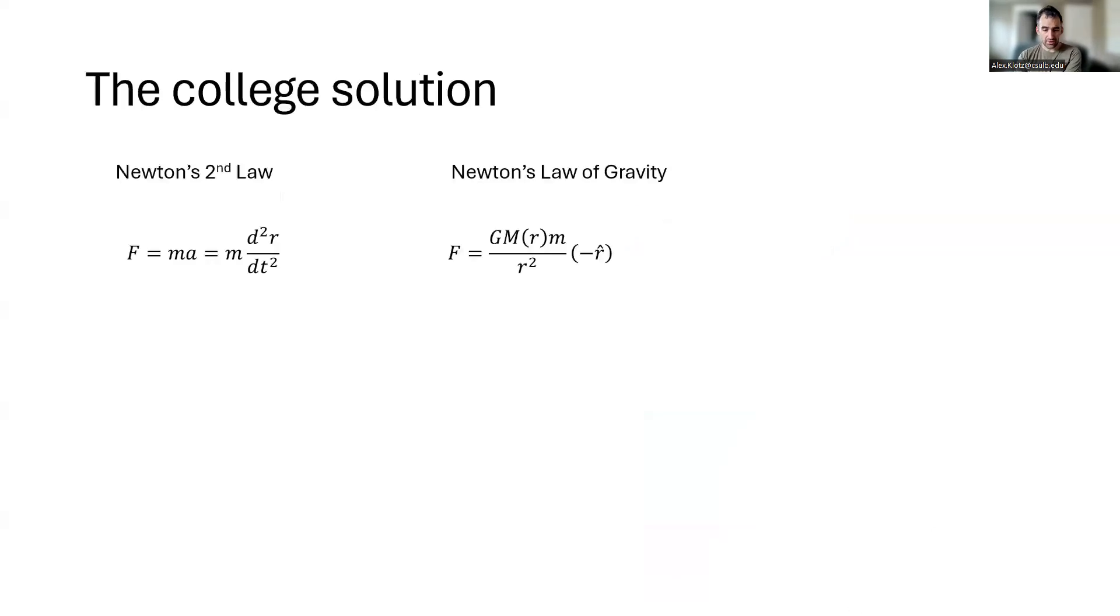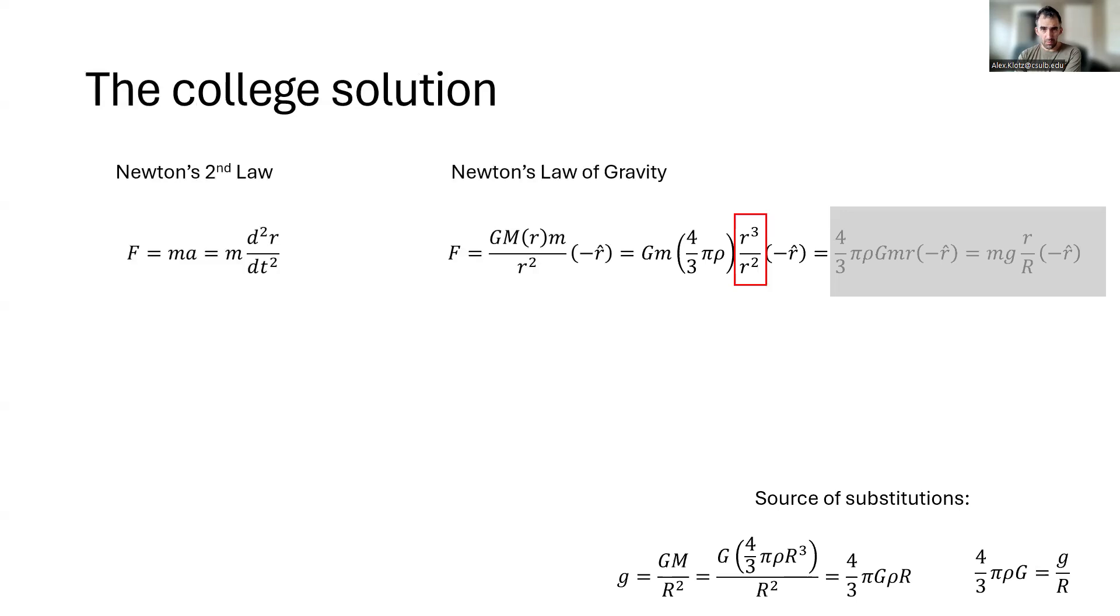So to figure out how long this would actually take to fall through, we can equate Newton's second law, F equals ma, with Newton's law of gravity, where the mass depends on radial position. So if we use the shell theorem, we know that the mass grows as the cube of radius, the gravitational field falls off as the square of radius, and these cubed and square cancel, leaving us with a linear term in gravity. We can also rewrite this in terms of the gravitational acceleration, which linearly interpolates between zero and its surface value.